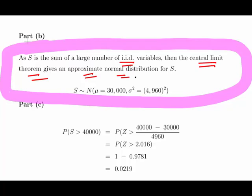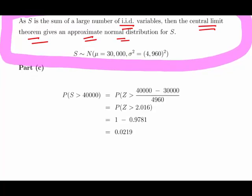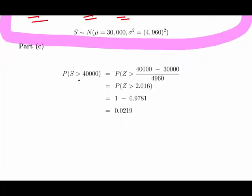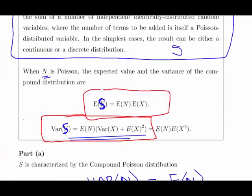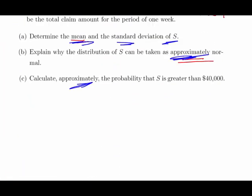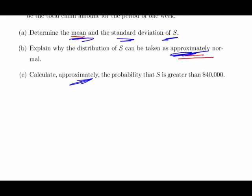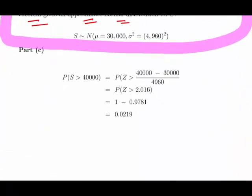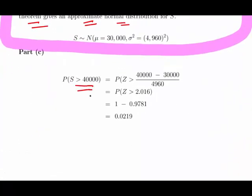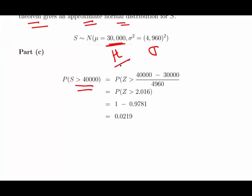But I do recognize in an exam situation that pressure can be on. Now, essentially what we're asked here in the last part is, what is the last part? I've forgotten, actually. Let's just go back up here. Calculate the probability that S is greater than $40,000. Essentially, this turns into a Z-score type calculation. Here we're using the fact that mu and sigma are here. So it's a Z-score calculation.